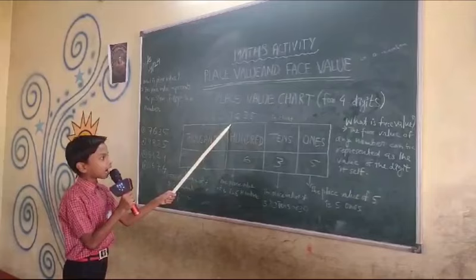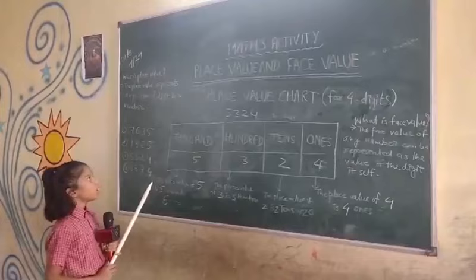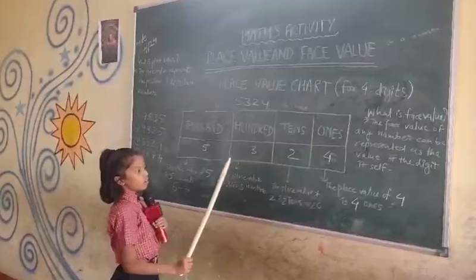Take the number 5,324. In the 1's place, the place value of 4 is 4 ones.